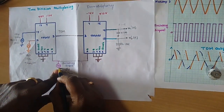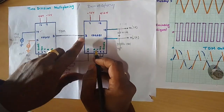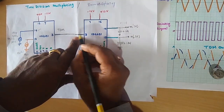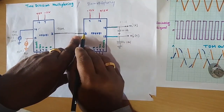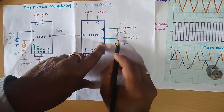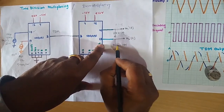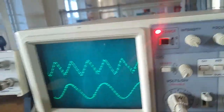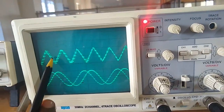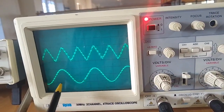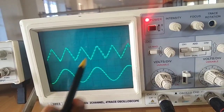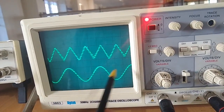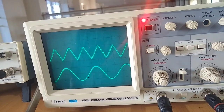Whenever the switching signal is negative, the TDM output consists of a sample of the triangular wave — message 2 — and that is routed to pin number 13, where it can be reconstructed with a capacitor across pin number 13. The output can be observed on the CRO. Approximately, the original triangular wave and the original sinusoidal wave can be reconstructed across pin numbers 13 and 14.